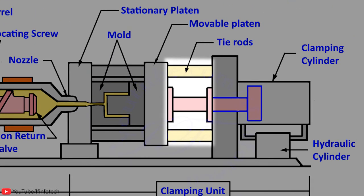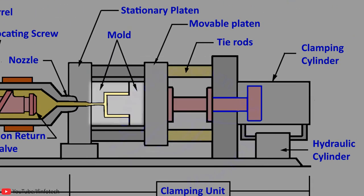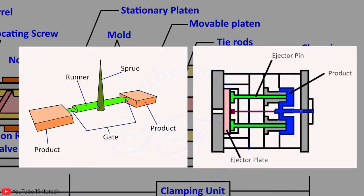Here, tie rods support and align the platen which then supports the mold. The mold consists of a screw to introduce molten resin and a runner that leads molten resin into the cavities.